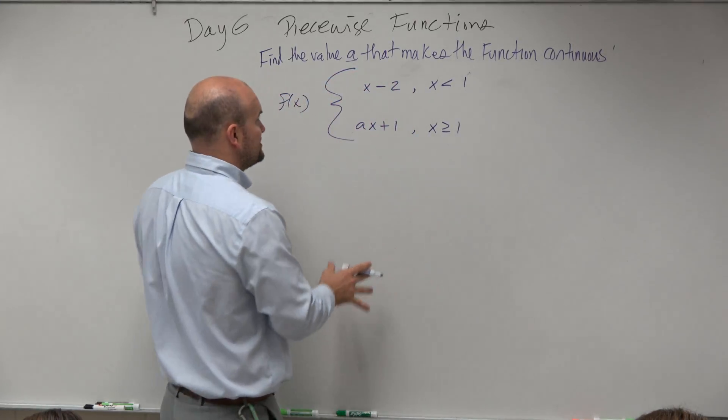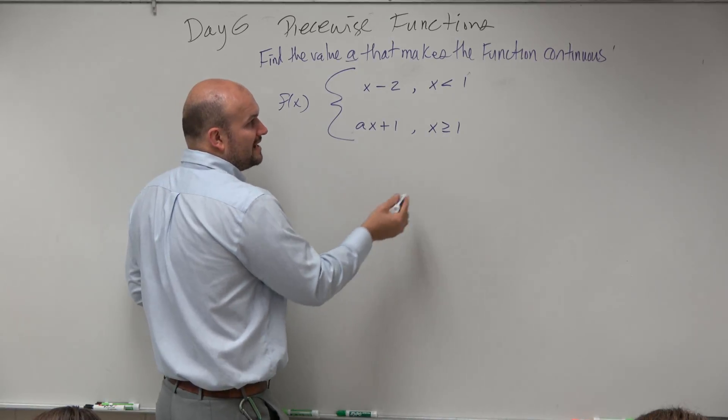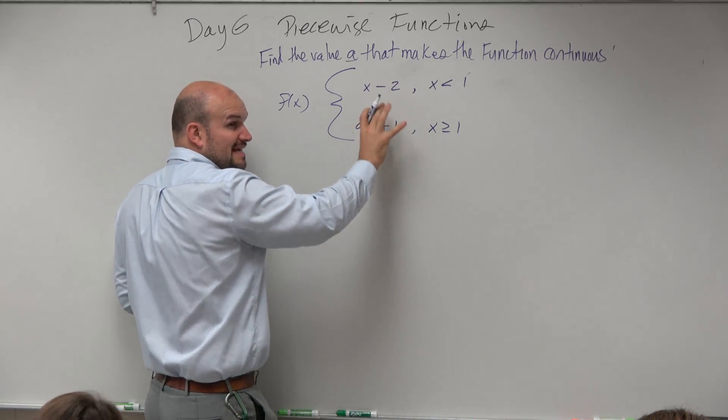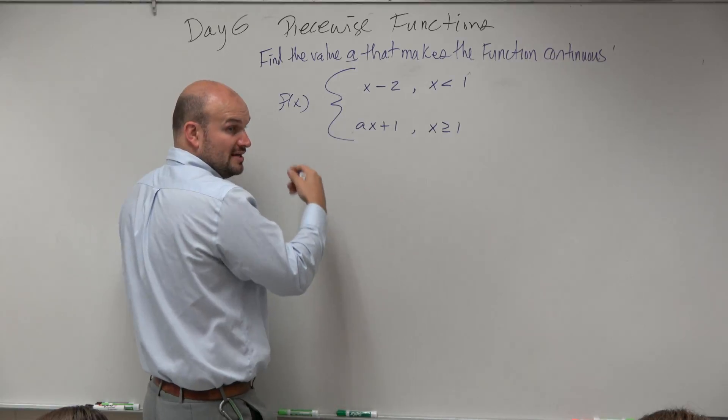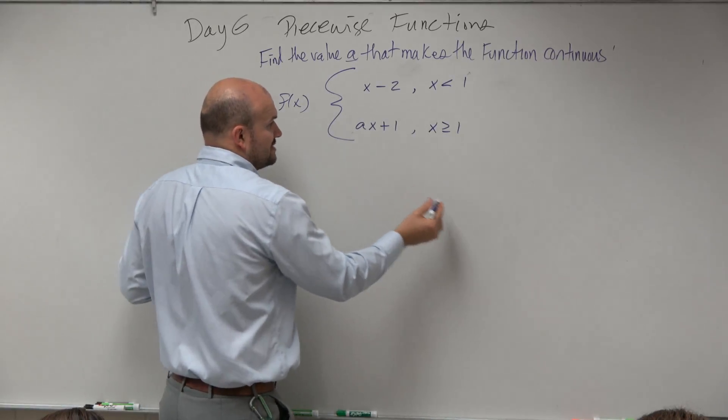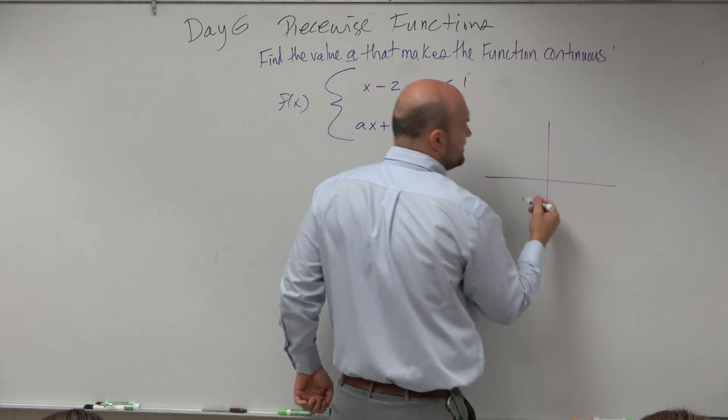So I have to create an equation. Basically what I need to say is that if these are going to be connected, if they're going to be equal at the same point, right, they're continuous. So we want this graph, whatever these lines look like,